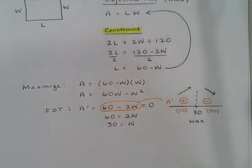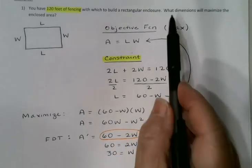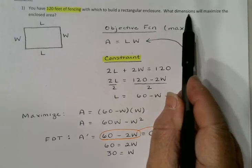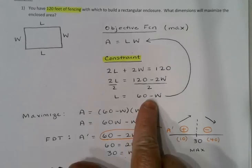So I think I've pretty much done this. The last thing I need to do is to make sure I actually answered the question that I was asked. In this case, the original question was what dimensions will maximize the enclosed area. I figured out the width is 30, but I should go back and find the length as well.